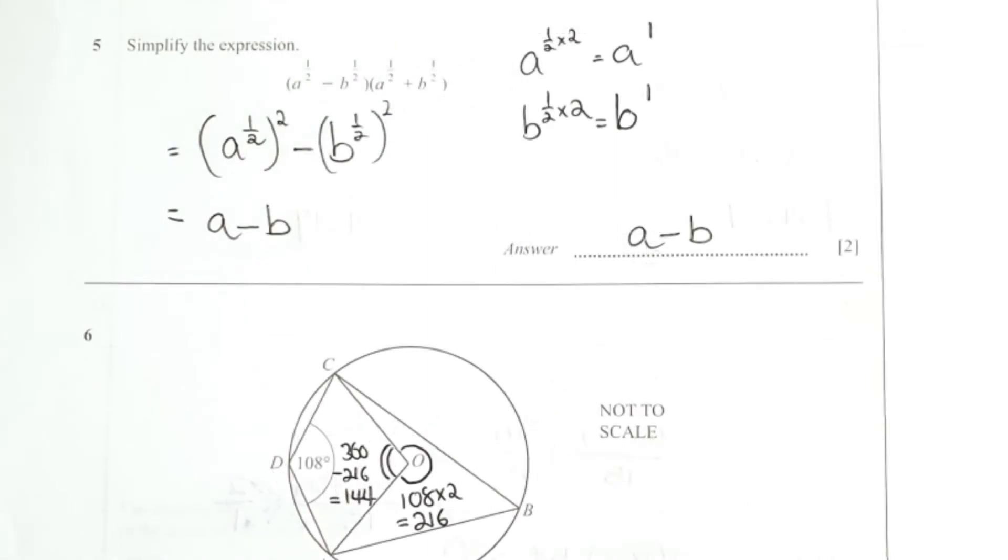For part 5, this is actually using the a squared minus b squared formula. So a here is actually a to the power 1 over 2, where b is actually b to the power of 1 over 2. Square them both and your final result will be a minus b.